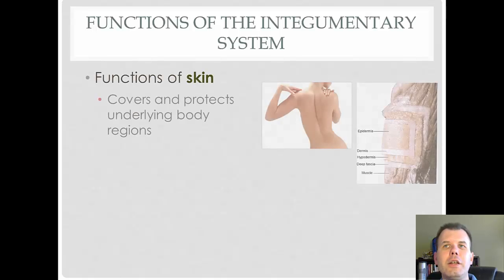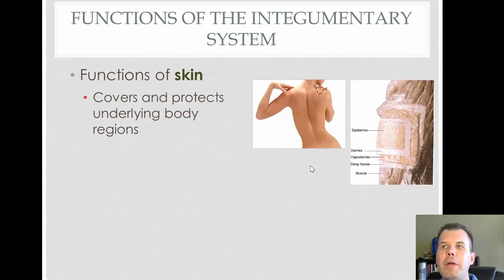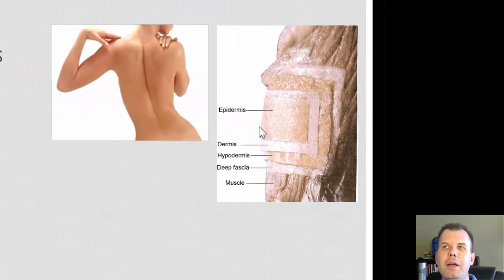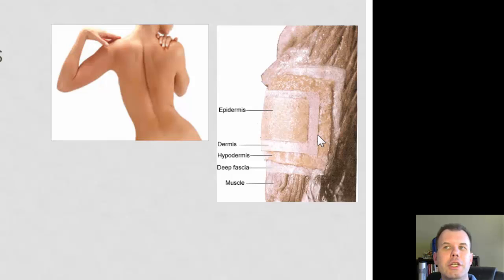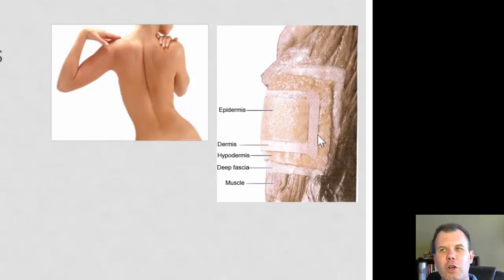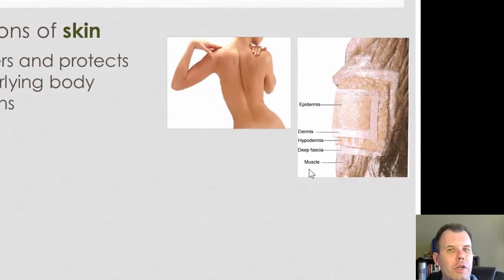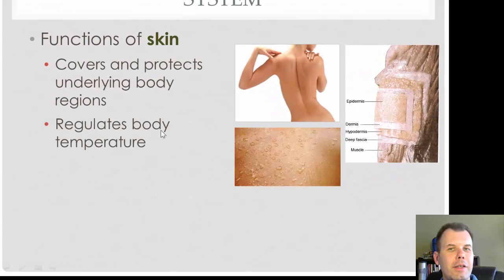What are the functions of skin? Skin covers and protects the underlying regions of the body from head to toe. You have the epidermis, which is that outside layer that gets shed about every three days. You have the dermis layer underneath — if you've ever had a sunburn or cut yourself, that's the layer that really hurts when it peels off. It's that fresh skin layer. And then the hypodermis or subcutaneous level, which is underneath, and then below that you get into the muscle and other tissue.